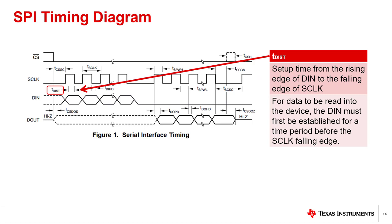TDIST is the setup time for the DIN data. This device uses SPI mode 1, where the S-Clock idles low and data is clocked in on the falling edge of S-Clock. DIN is typically set up on the rising edge of S-Clock, but TDIST defines a minimum time that DIN must be valid before the falling edge of S-Clock. The setup time is the time required for DIN to be stable before the active falling S-Clock edge.